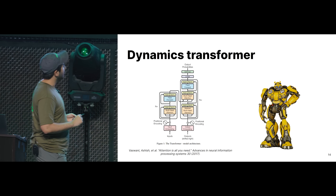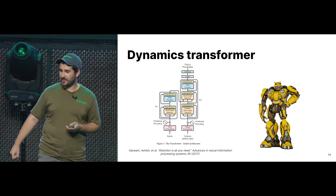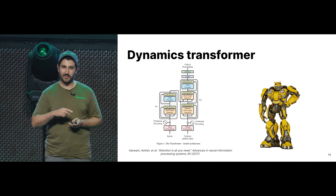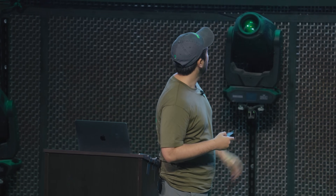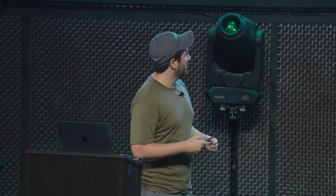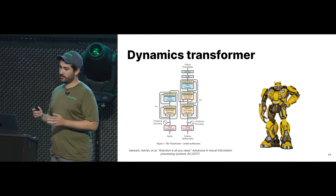Now to the beefy part — the dynamics transformer. A transformer is basically the same architecture as a large language model: ChatGPT, Llama, these kinds of models. For large language models, a token is roughly one word; a sentence is a set of tokens; a document is a set of tokens. For us, an image is a set of tokens, a video is a set of images, so a set of tokens. We train it the same way large language model people do — with a cross-entropy loss, predicting the next token.